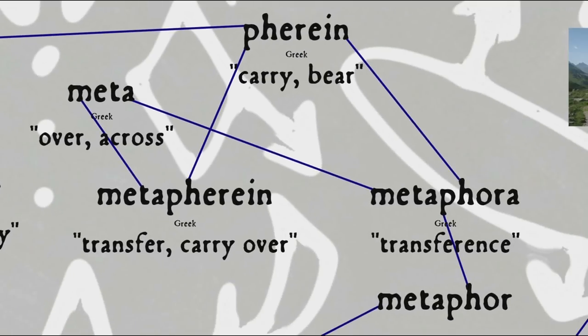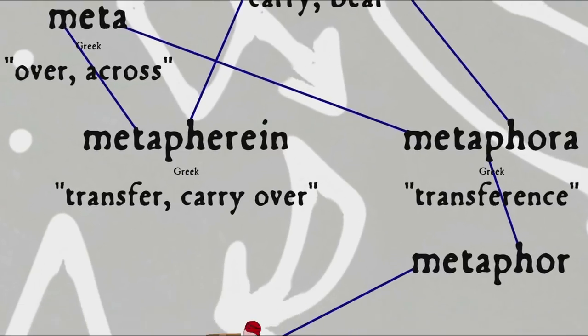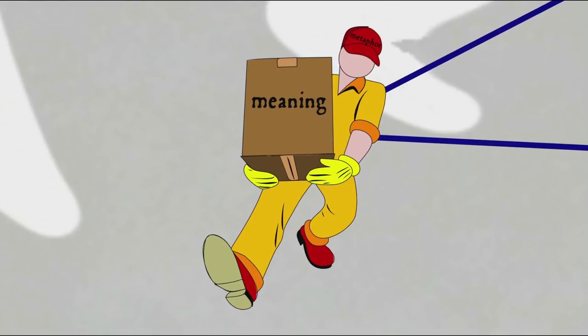And interestingly, that same Proto-Indo-European root also came into Greek as ferrein, to carry or bear, which when combined with meta, meaning over or across, leads to the verb metaferrein, to transfer or carry over, especially in the rhetorical sense of transferring a word to a new sense, and the noun metaphora, transference. So in a sense the word metaphor is a metaphor, from physically carrying something across to metaphorically carrying over a meaning, and a metaphor is another type of comparison, like a symbol.